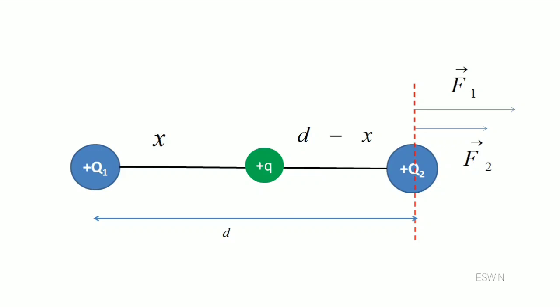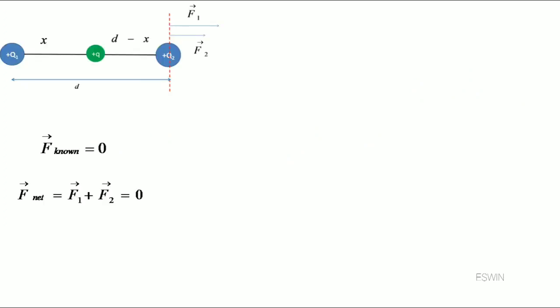There will be force F1 acting on q2, which is the force due to q1, and it is repulsive, so it is directed towards the right side. F2 will be the force acting on q2 due to small q, and it will also be directed towards the right side. For a system to be in equilibrium, the net force acting on each charge must be equal to zero. The net force acting on q2 is F1 plus F2, and we equate that to zero, giving us F1 equal to minus F2.